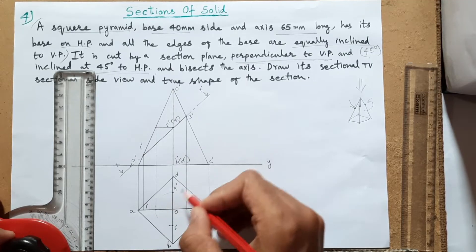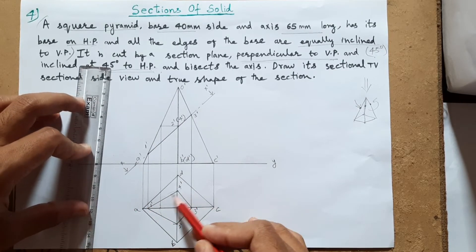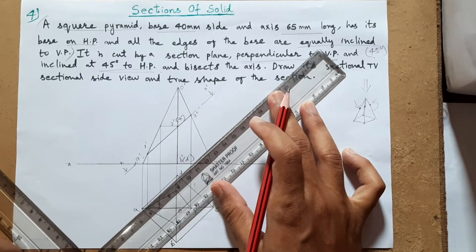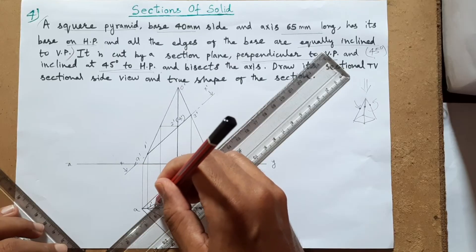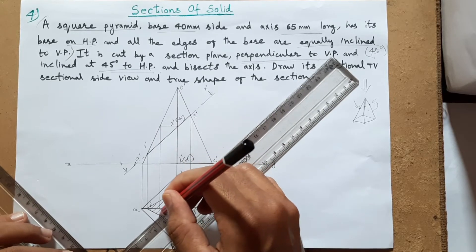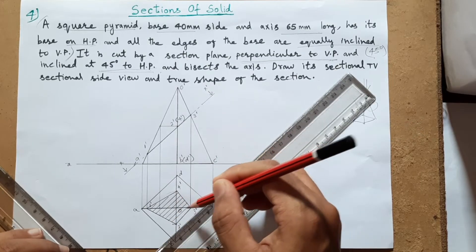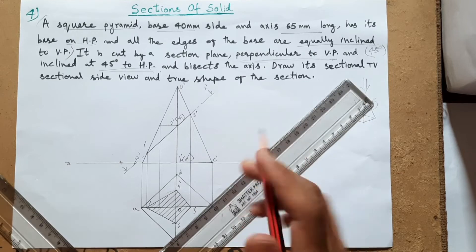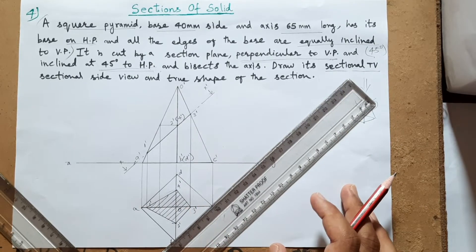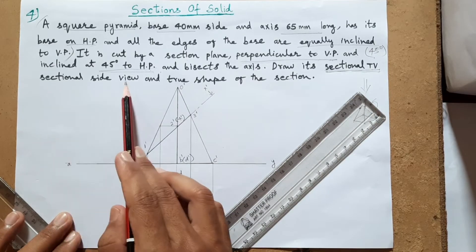So point 1-dash comes here, 2-dash here, 3-dash here, 4-dash here. Join all four points with a scale. In this region we will do hatching - hatching lines are 45-degree equally spaced lines. The hatching part is now completed. This is the sectional top view - it contains the section, meaning the new surface exposed after cutting.